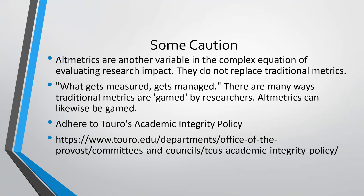Now that we've covered these five categories of metrics, it's important to exercise some caution about metrics in general. Altmetrics are another variable in the complex equation of evaluating research impact — they do not replace traditional metrics, they complement them, and they provide insights that were previously unmeasured. They are also almost immediately accessible, whereas traditional metrics generally take a long time before a research article gets cited. It's worth noting that there can be legitimate or unscrupulous methods of boosting numbers. Researchers should be aware of the ethics surrounding research and authorship, and should consult the academic integrity policy, the norms of the relevant field, and recommendations of publishers and working groups like the International Committee of Medical Journal Editors and others.